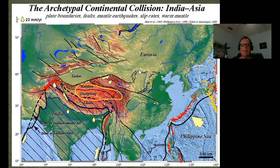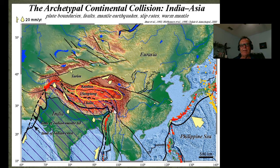This is the archetypal view of what the India-Asia collision looks like now. You can see the Tarim Basin here, a basin that opened up between India and Eurasia, and all of this material being squeezed out to the east as this battering ram of India collided with Asia.